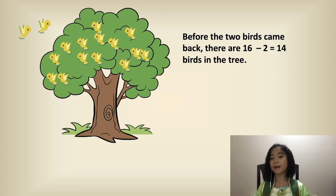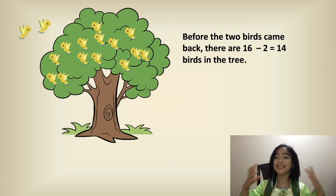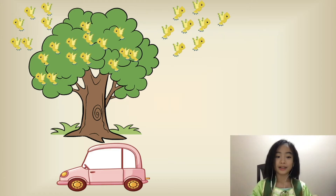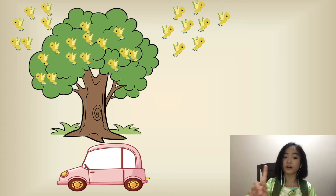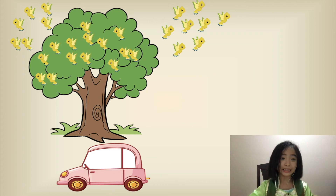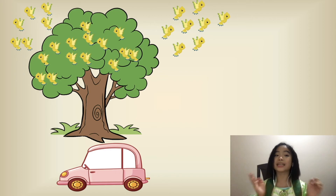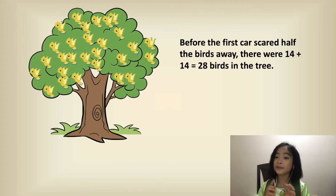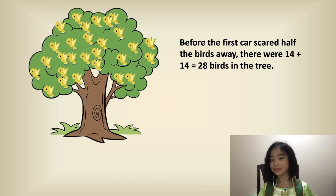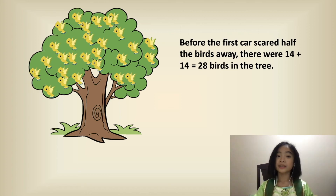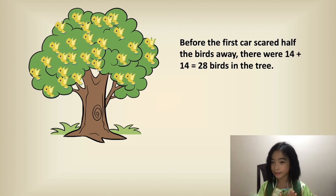So before the two birds came back, there are sixteen minus two equals fourteen birds in the tree. This is what it looked like when the first car drove by — it scared half the birds away. So there are fourteen birds in the tree, and fourteen birds that are scared away. So before the first car scared half the birds away, there were fourteen plus fourteen equals twenty-eight birds in the tree. So before the three cars drove by, there are twenty-eight birds in the tree.